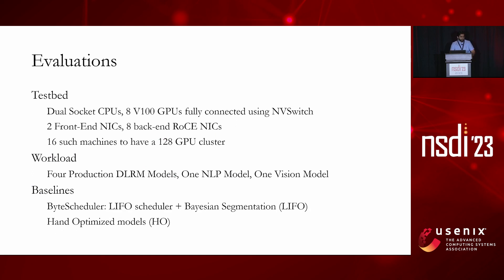For evaluation, the testbed has machines with dual-socket CPUs, eight V100 GPUs fully connected using NVSwitch, two front-end NICs, and eight back-end RoCE NICs for RDMA connectivity across machines. We put together 16 such machines to get a 128 GPU cluster. The workload includes four production DLRM models, one NLP model, and one vision model — a good mix of different applications and parallelism modes. Baselines include ByteScheduler, which does LIFO scheduling plus execution planning via Bayesian segmentation, and a hand-optimized model representing the best scheduling optimization with execution planning layered on top.